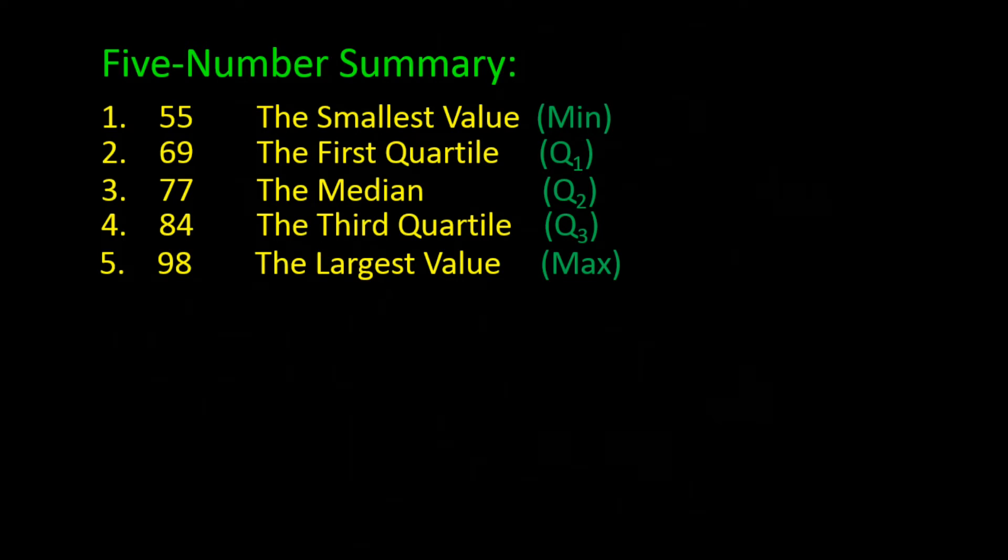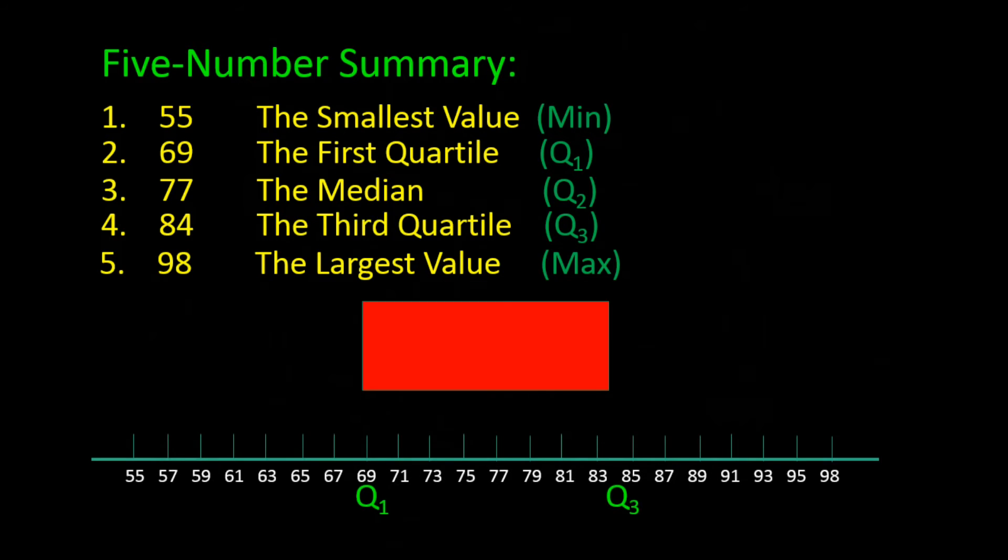The first step is to draw a box with the ends of the box at Q1 and Q3, so that would be 69 and 84. Here you see a box with the left end of the box at 69 and the right end of the box at 84.